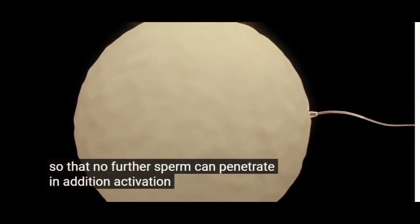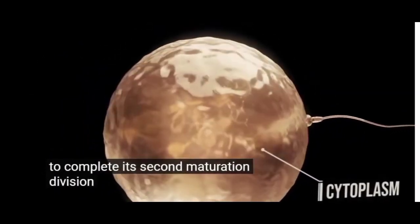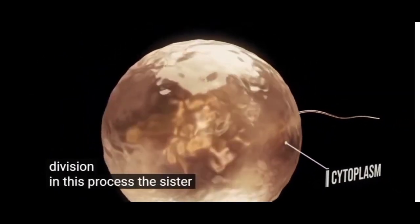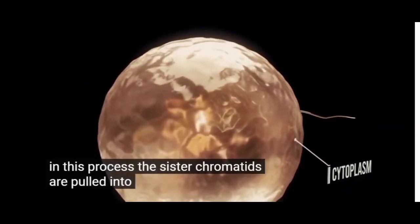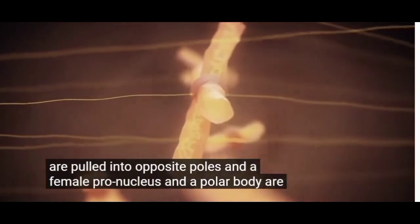In addition, activation causes the ovum to complete its second maturation division. In this process, the sister chromatids are pulled into opposite poles and the female pronucleus and a polar body are formed.